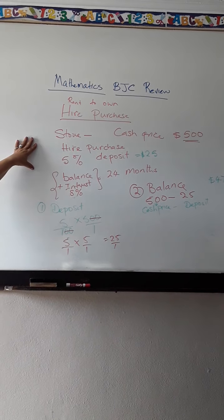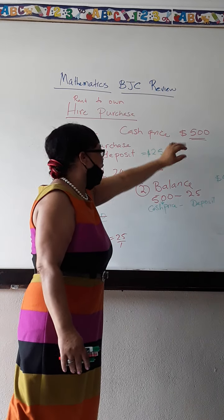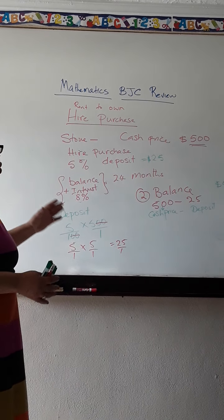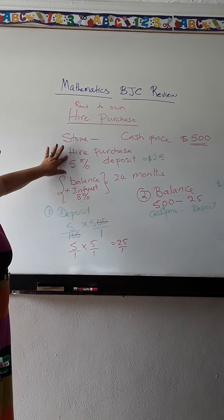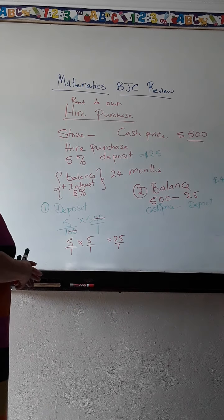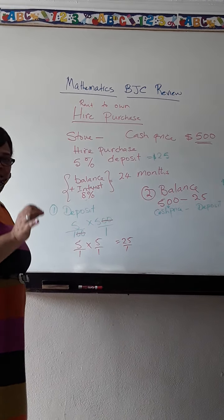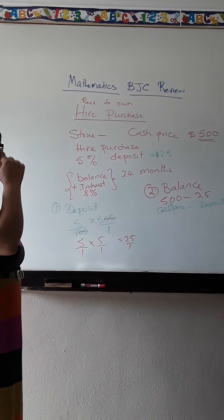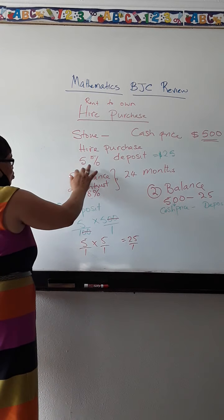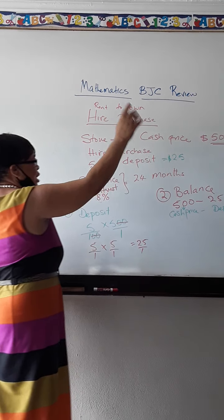So let me just go over this slowly. For those of us who need it, go slowly. The cash price for the stove was $500. I could buy it for $500 if I have cash. Or I could buy this stove with hire purchase. Normally, I have to make a deposit of a percentage of the cost or sometimes they will give you the specific amount for the deposit. This problem asks me for 5% of the cash price.